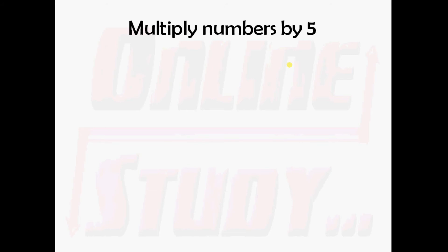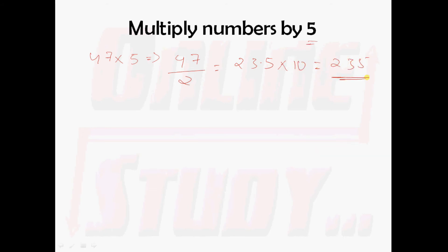Now we shall take the next set of examples — multiplying numbers by 5. We shall take an example of 47 into 5. First divide 47 by 2, you will get 23.5. And this 23.5 should be multiplied with 10, so you will get 235. So to multiply a number by 5: divide by 2 and multiply the result by 10.